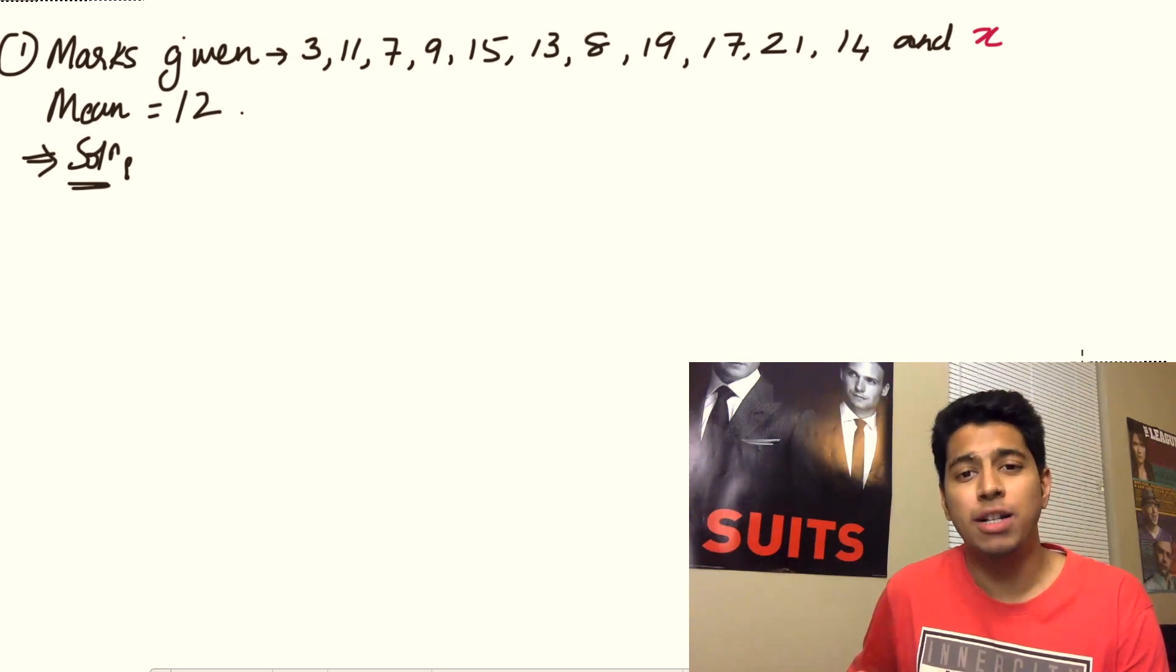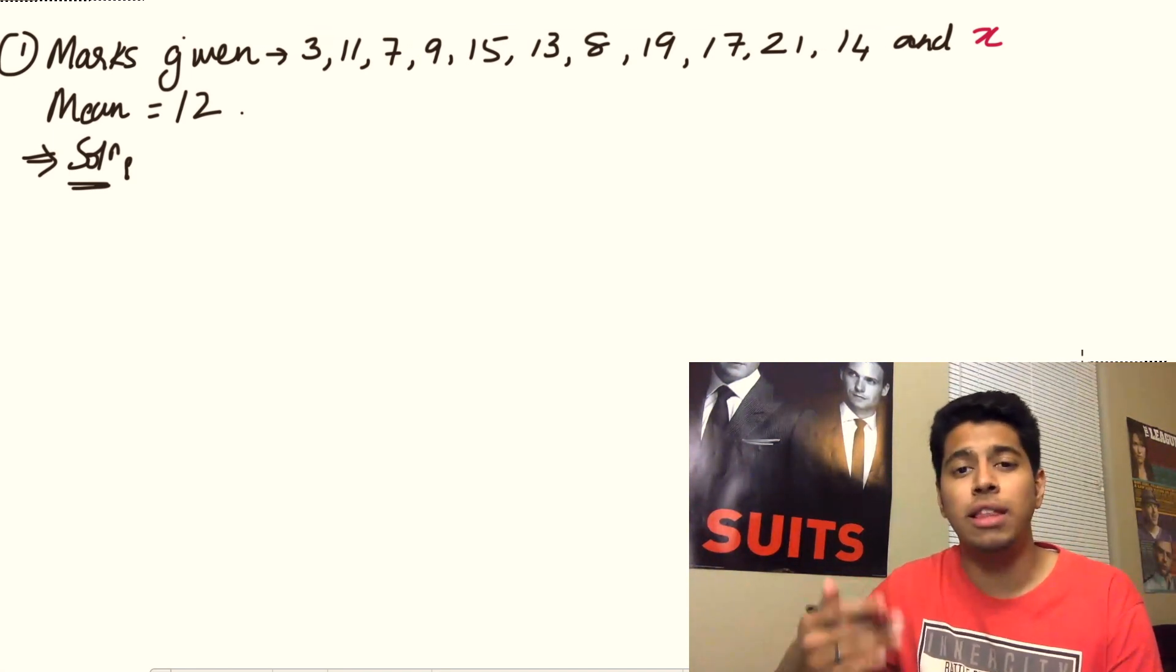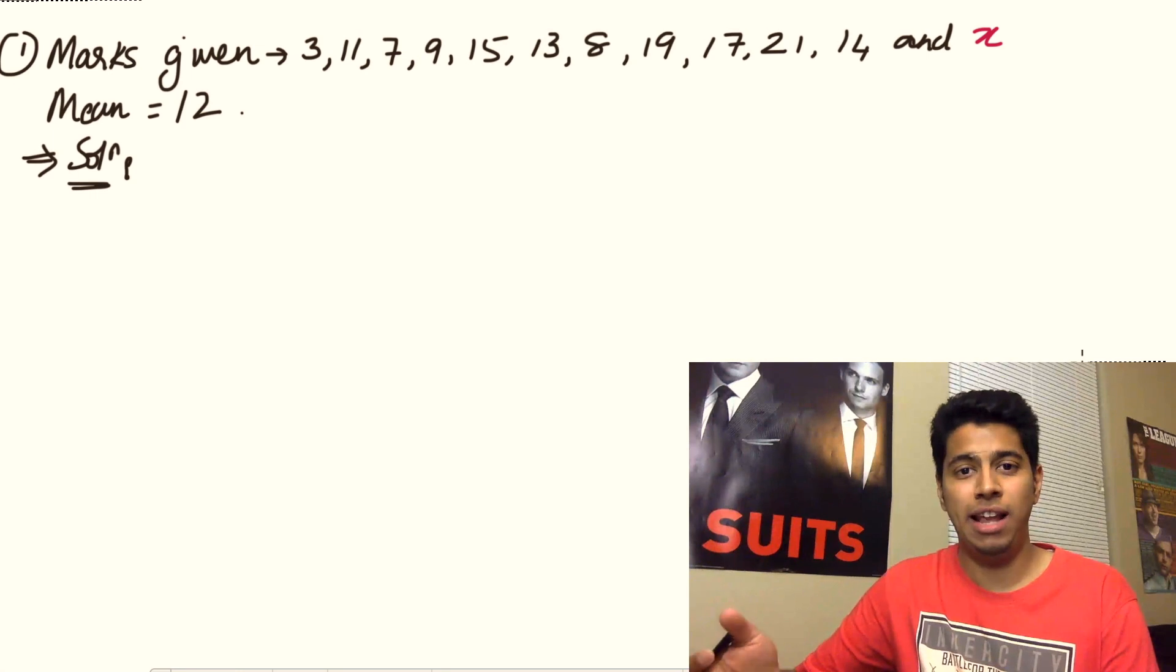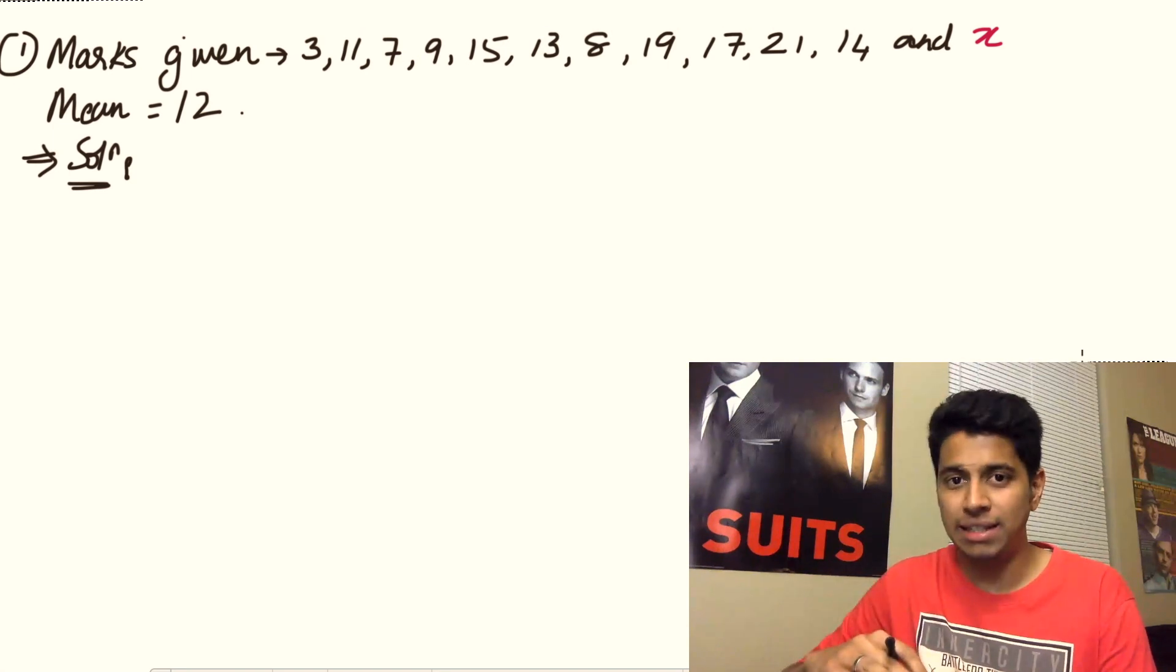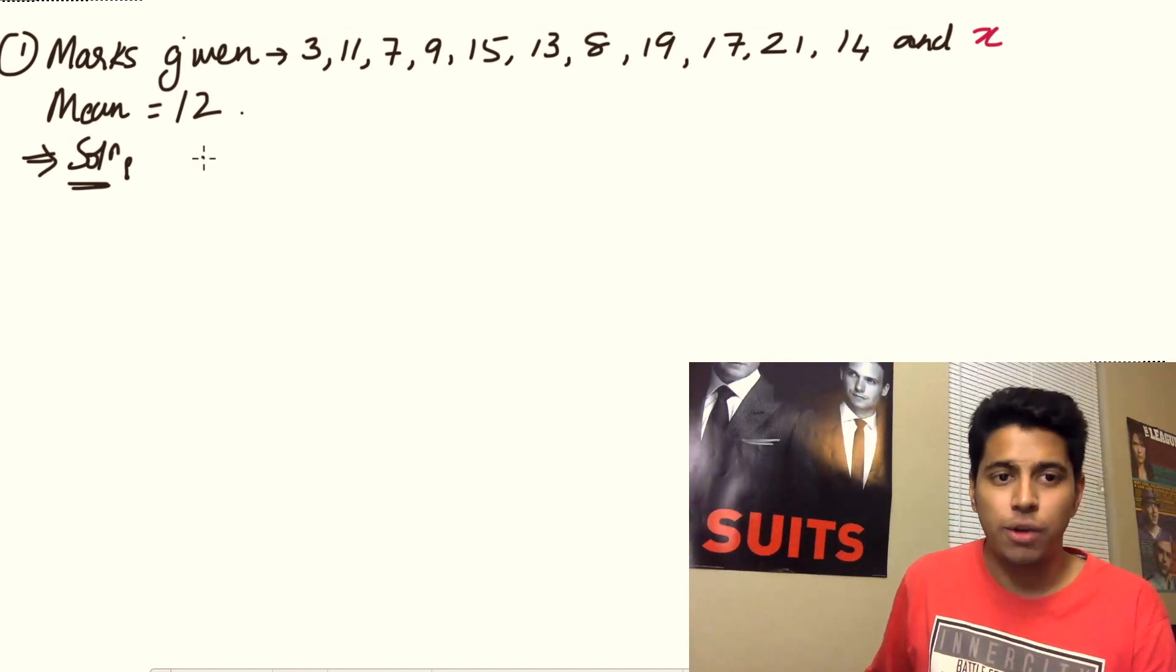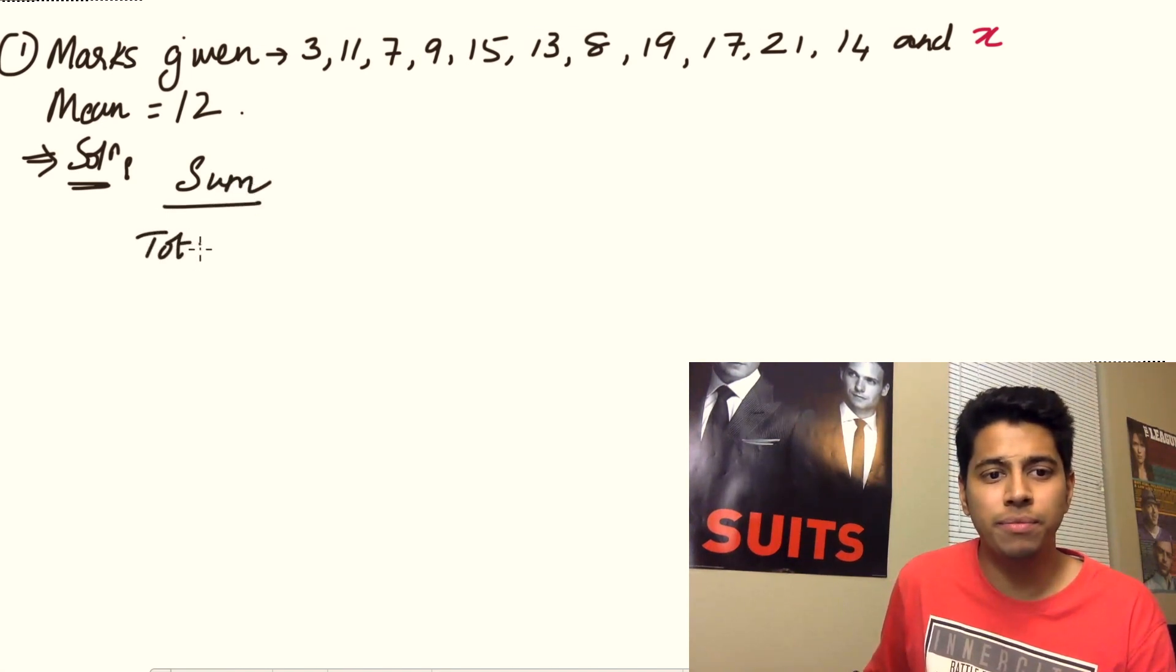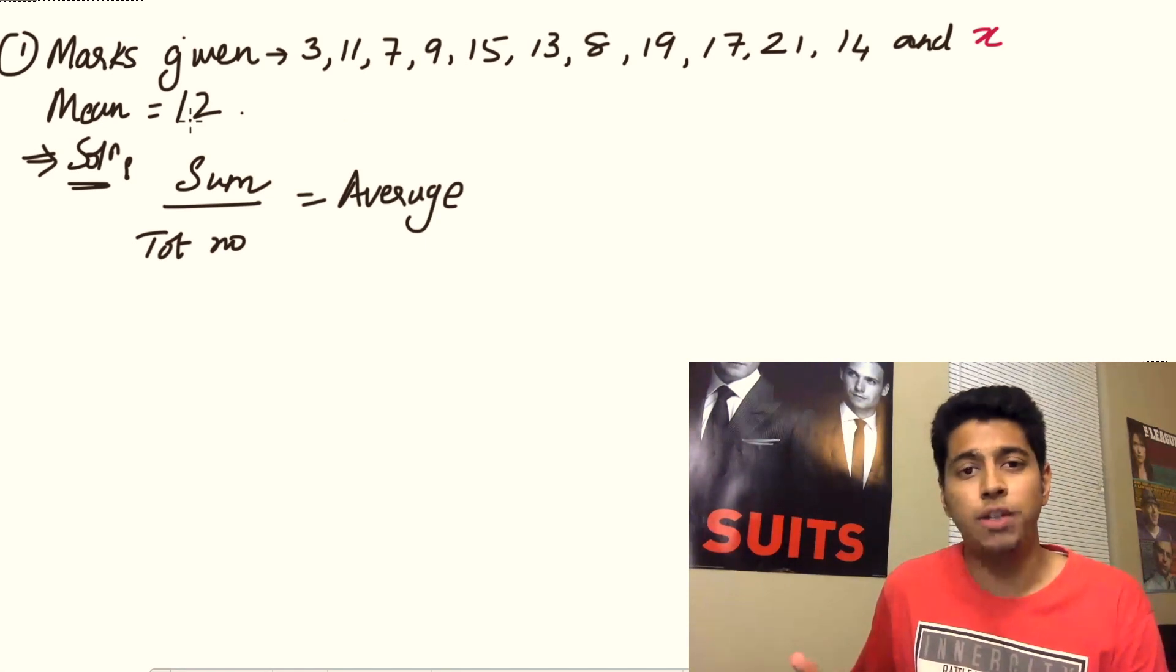Now for the first sum, they've given you the marks of 12 children: 3, 11, 7, 9, 15, et cetera, and x. So you have one unknown x. They've also given you that the mean of the class is 12. In sums like this, they're going to give you the mean and ask you what is the marks of one of the kids. To find that, you can find the total marks and subtract all of the other kids' marks to get the marks of the child you need to find. First, write down the equation that you know. The eternal equation is sum over total number equals the average. Now average and mean are the same thing, don't get confused. It's just an interchangeable term.